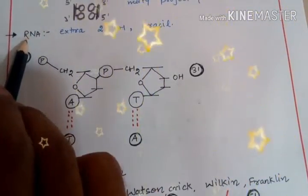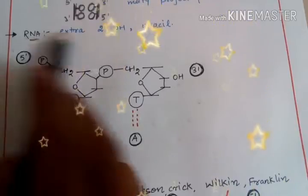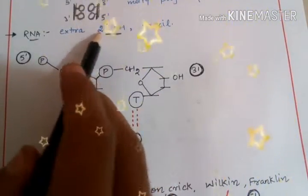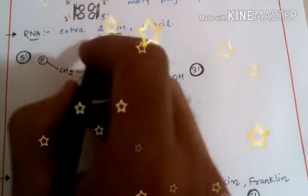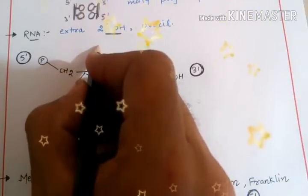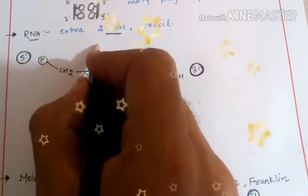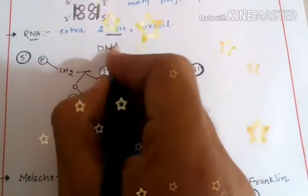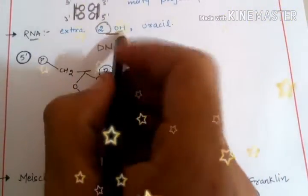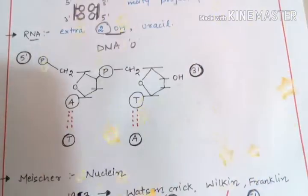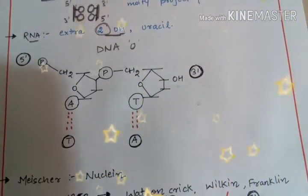So what is the difference between RNA and DNA? RNA will have an extra OH group at the 2' position. As we have discussed earlier, RNA will have ribose sugar and DNA will have deoxyribose. DNA is lacking an oxygen molecule at the second position and RNA will have that particular oxygen. That's why it is more reactive.